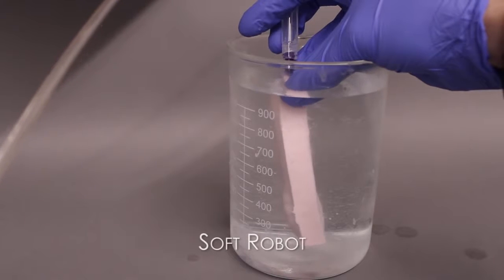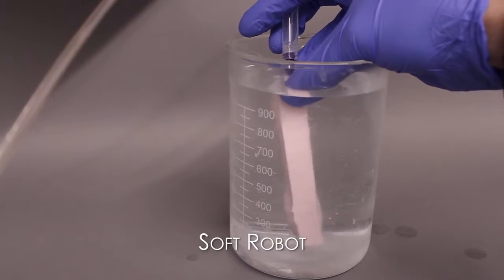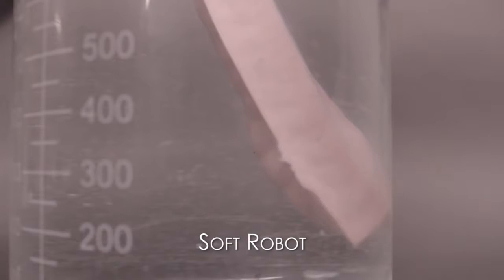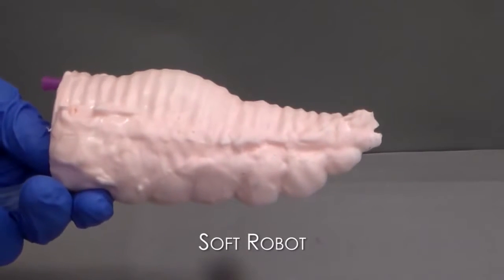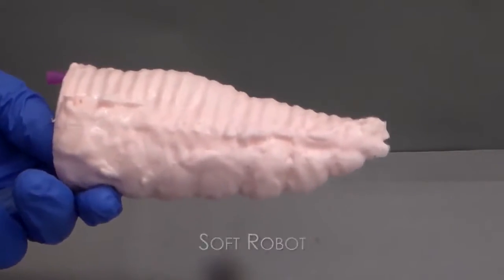The body itself is made out of some kind of silicone or some other kind of polyacrylamide, some other kind of squishy rubbery stuff, and that allows its shape to change in ways that we don't normally see if we're thinking of robotic systems.